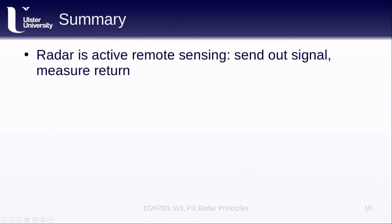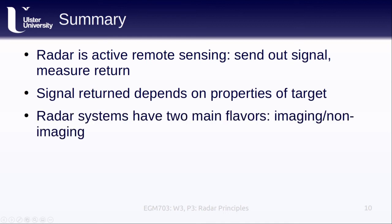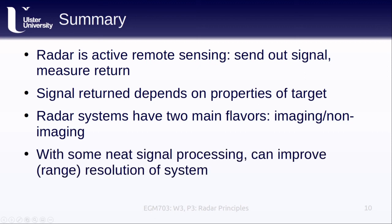So in this lesson we've discussed how radar is active remote sensing. The satellite is actually sending out the signal and measuring the return. The signal that we measure depends on the properties of the target such as the normalized radar cross-section as well as the properties of the signal that we sent out. We covered the two main flavors of radar systems that we use in microwave remote sensing. We have imaging and non-imaging radars which provide one-dimensional or two-dimensional measurements respectively. And finally we covered how with some neat signal processing techniques we can improve the range resolution of our radar system. That is how well we can distinguish between targets that are at different distances to our sensor.